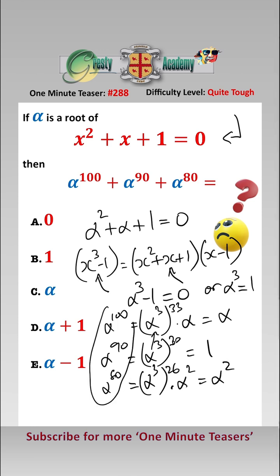Therefore, alpha to the 100 add alpha to the 90 add alpha to the 80 is equal to alpha squared add alpha add 1 which we know is equal to 0. So it's answer A.